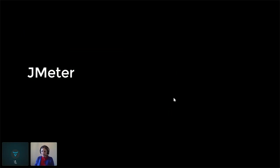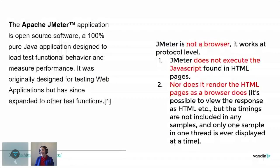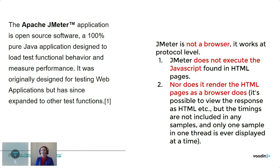Now we've come to JMeter finally. What you should know about JMeter: it's been around for around 20 years, it's open source, implemented in Java, and it's not a browser. It does not parse JavaScript, it does not execute the JavaScript it receives, and it does not render the HTML it receives.